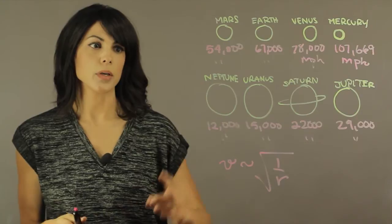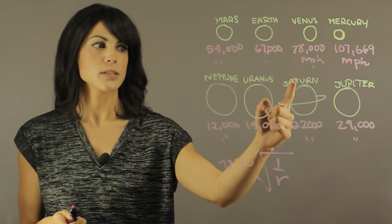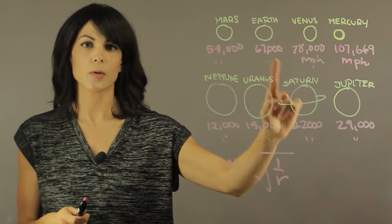So in order, it would be Neptune, Uranus, Saturn, Jupiter, Mars, Earth, Venus, and Mercury.